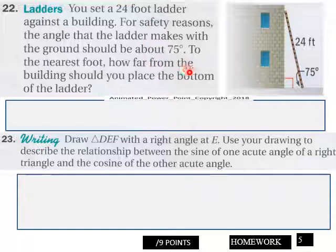Page five, you got a word problem. How far from the building should you place the bottom of the ladder? Do your calculations here and then tell me how far away it should be. And then you got a writing question here. Use your drawing, so you got to make a drawing here, DEF. Describe the relationship between the sine of one acute angle of a right triangle and the cosine of the other acute angle, and put your explanations in here, your sentences in here. You got nine points here for page five.